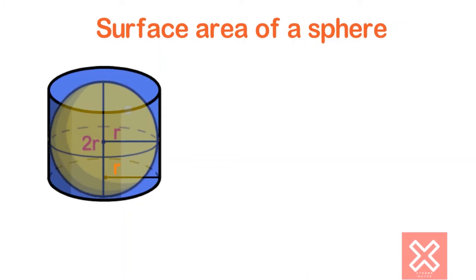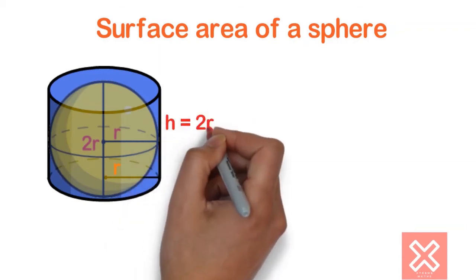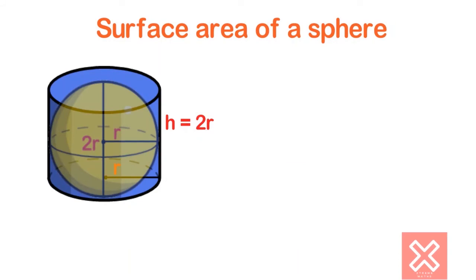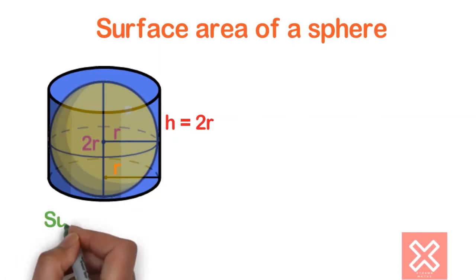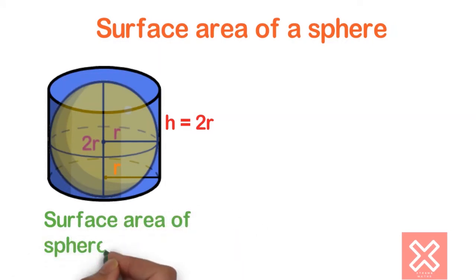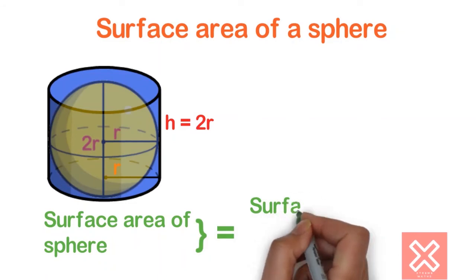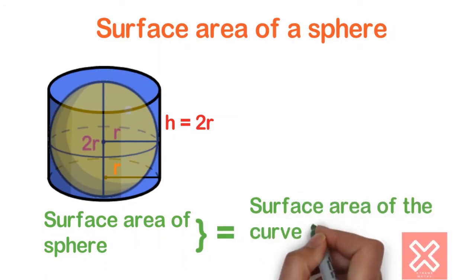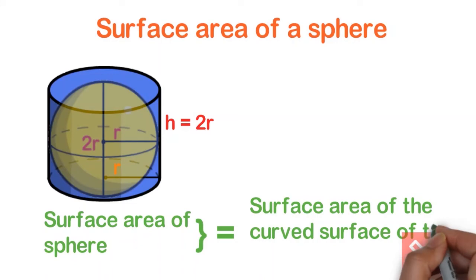Now let's immerse this sphere inside the circumscribing cylinder. You can see that height equals diameter, so we write it as 2R. The radius of the sphere equals the radius of the circumscribed cylinder. So we can write: the surface area of the sphere equals the surface area of the curved surface of the circumscribed cylinder.